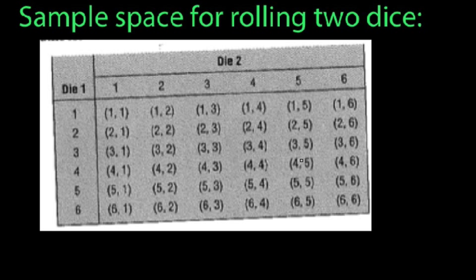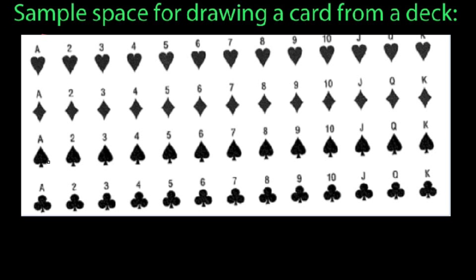Common sample spaces you want to get used to. On the top left, the sample space for rolling two dice — you can distinguish between, say, a 3-2 and a 2-3. If you colored your dice two different colors, like red and blue, those are different outcomes. This table also works in diagonals — for example, 4 and 1, 3 and 2, 2 and 3, 1 and 4 all give sums of 5. For drawing a card from a deck: the top two suits are red, the bottom two are black — 52 cards total, half red and half black, 4 suits, 13 cards per suit.